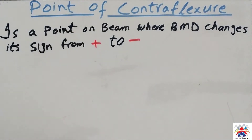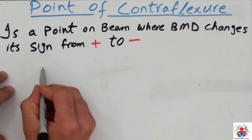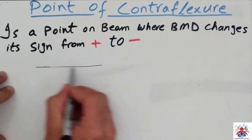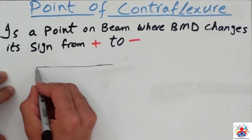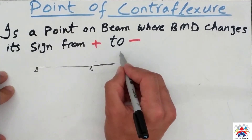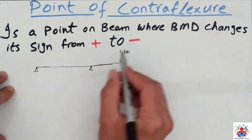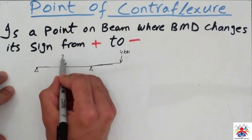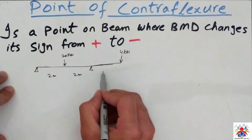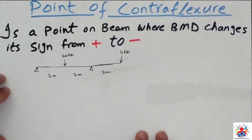I am going to give you an example and I hope you will understand it better. This example is taken from a previous video already uploaded on my channel. We have a beam with a point load acting downwards of 4 kilonewtons, and also 20 kilonewtons, with spans of 2 meters, 2 meters, and 2 meters.